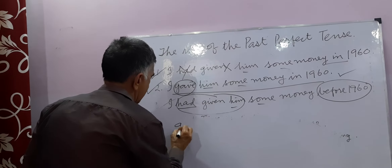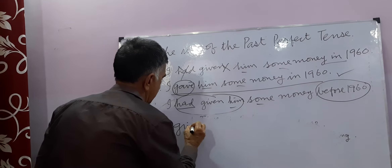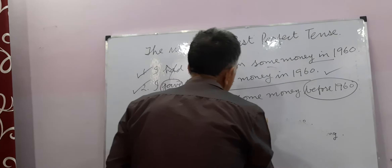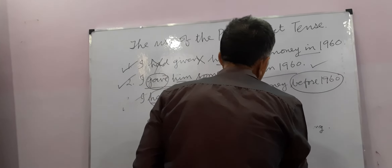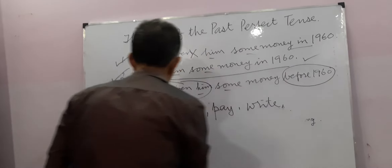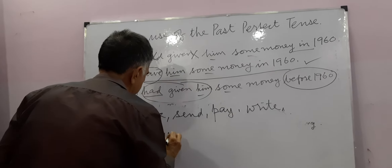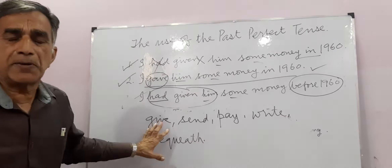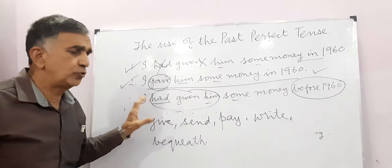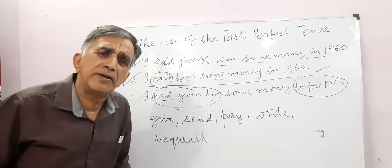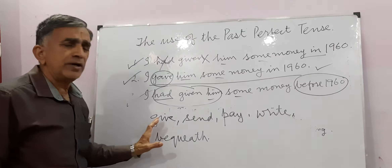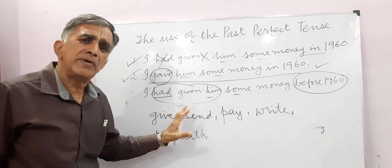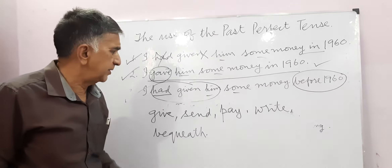Those verbs are: give, send, pay, write, bequeath. These verbs of English can take two objects — an indirect object and a direct object. For example: I wrote John two letters. I sent him my message yesterday.